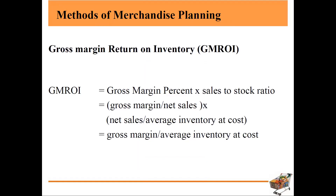Gross Margin Return on Inventory (GMROI): the gross margin percentage is divided by net sales, multiplied by net sales divided by average inventory at cost. At the end, what we get is gross margin divided by average inventory at cost. This gives us the Gross Margin Return on Inventory — GMROI — and this is how we calculate it.